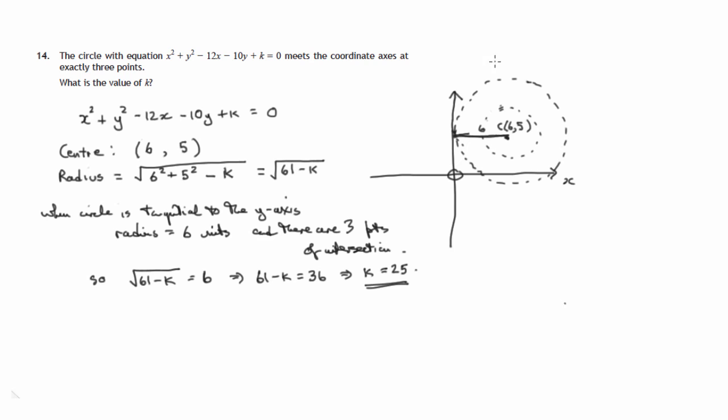We could continue increasing the circle until it passes through the origin. There's another intersection along the x-axis here. And there's a third one on the y-axis up here. So there's one, two, three. And in that case, let's draw the radius in from the origin up to the centre and complete a small right-angled triangle. And since the centre is six, five, this will be six along, five up.